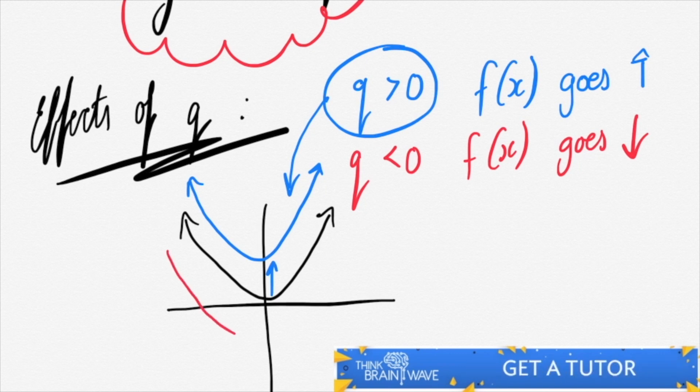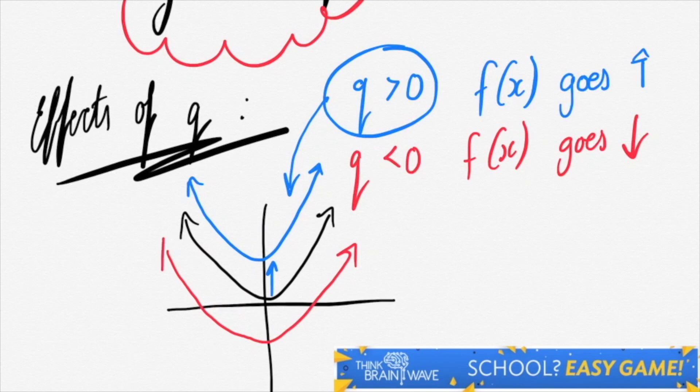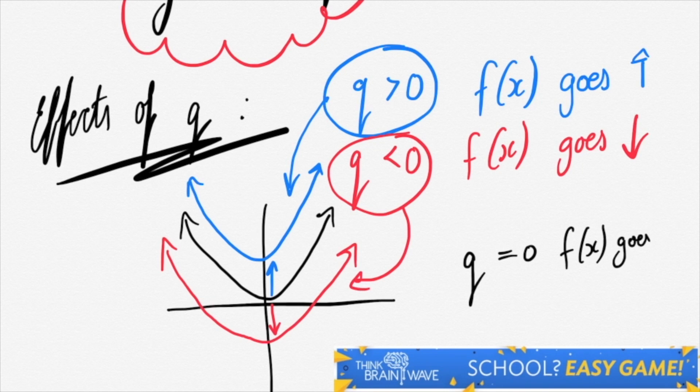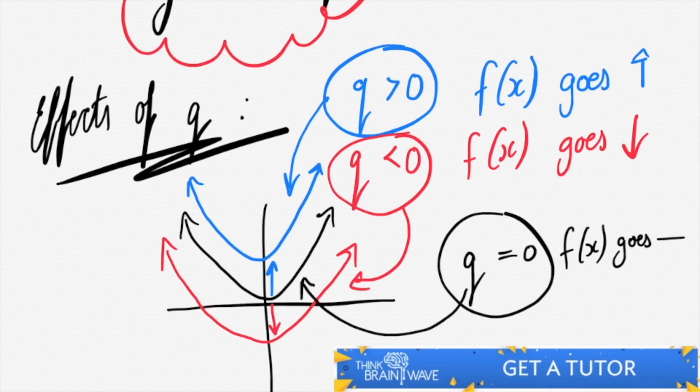When q is negative, it shifts down to the value of q. So q is equal to 0 for f(x). The function doesn't go up or down. It stays on the origin, as you can see over here.